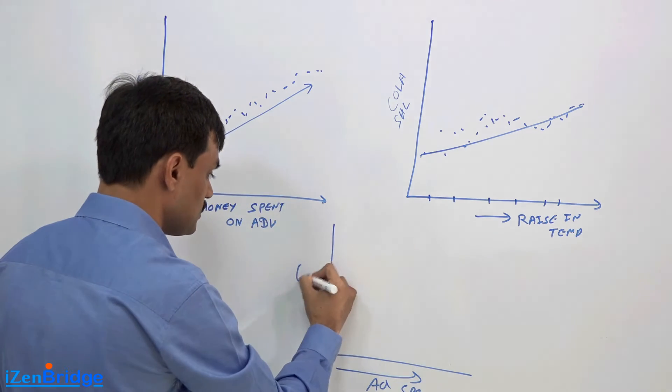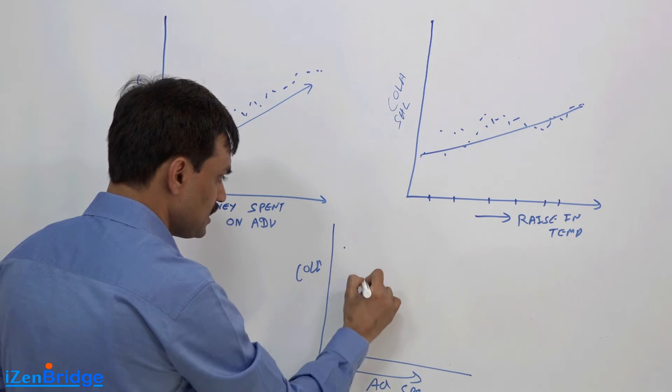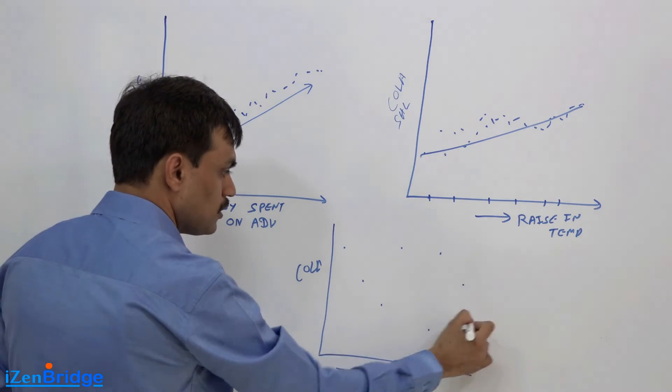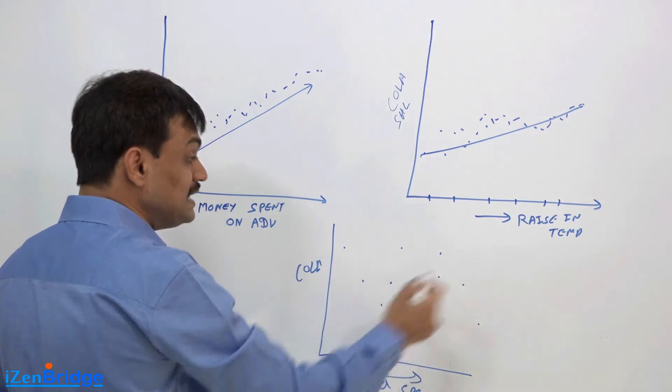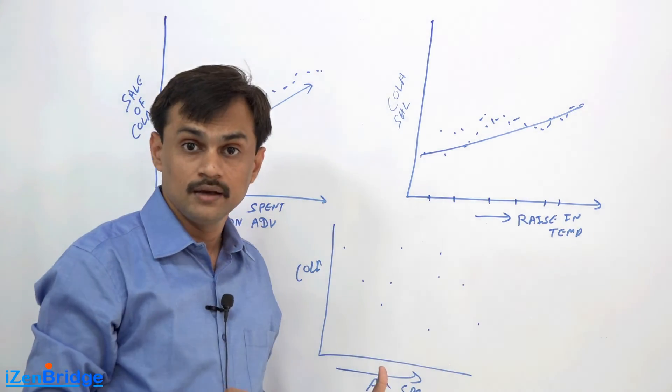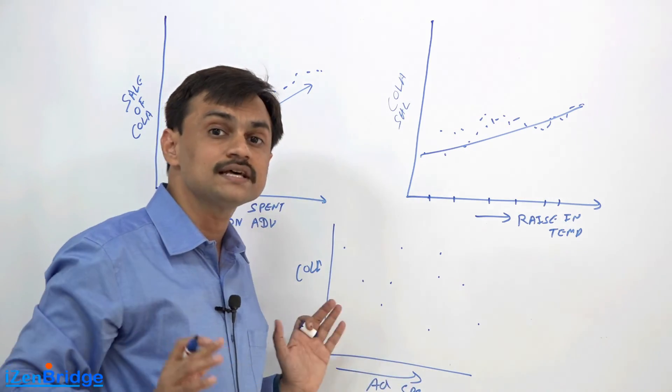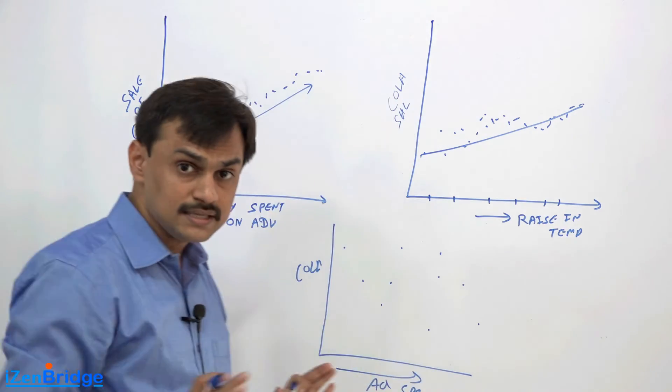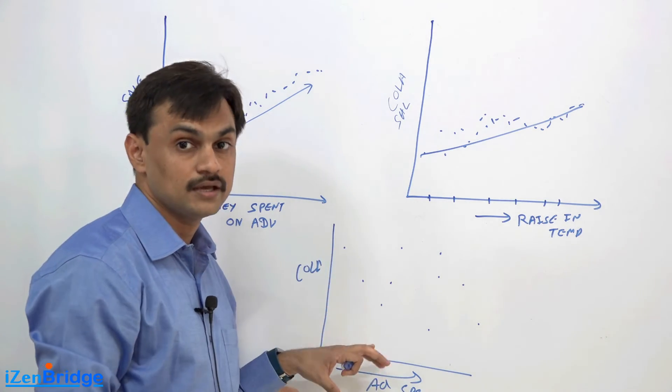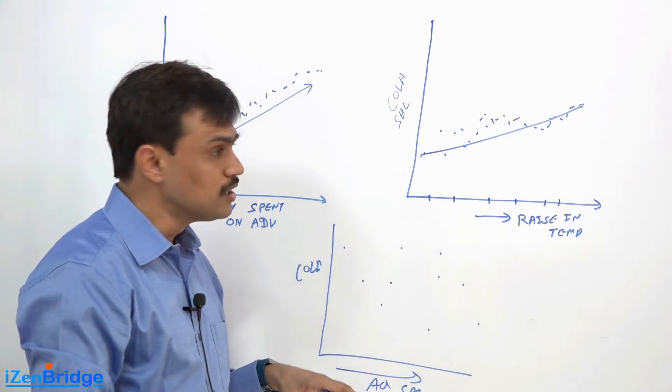You see something like this kind of graph, so there is no linearity coming in, which shows that these two things are not related. Meaning, irrespective of these guys increasing their spending or decreasing their spending, you can't see the trend of your cola sale coming with the ad spending.